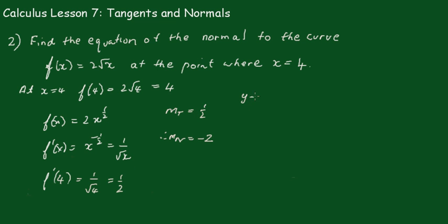So again using y - y₁ = m(x - x₁). We'll put in the y₁, which is equal to 4. The gradient of the normal, which is negative 2. And the x value, which was 4. And that gives me y - 4 = -2x + 8. And putting this in general form again, we get 2x + y - 12 = 0 as the equation of our normal.